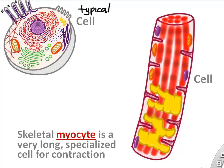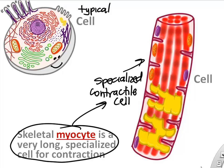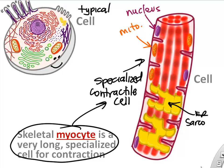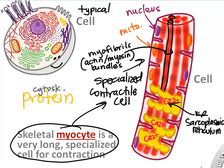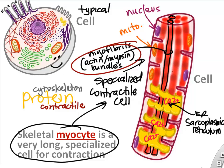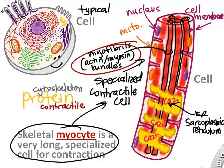Muscle fibers are specialized cells that contract. Like any cell, they have mitochondria and nuclei — actually several nuclei. The endoplasmic reticulum in muscle cells is called the sarcoplasmic reticulum (SR), and its job is to store calcium — it's a calcium storage site. Muscle cells are packed with myofibrils, which are tiny bundles of actin and myosin protein that allow contraction, almost like cytoskeleton proteins specialized for changing the cell's size and pulling on tendons.